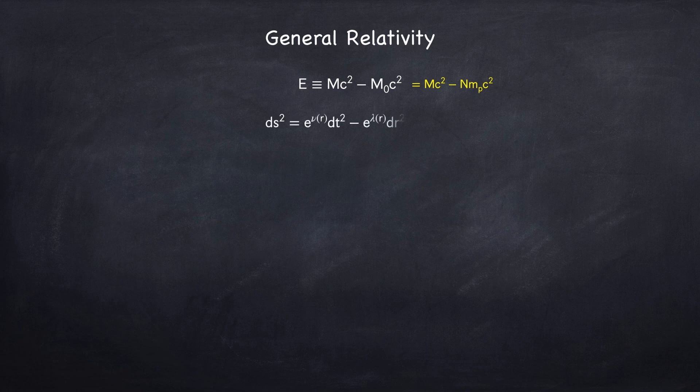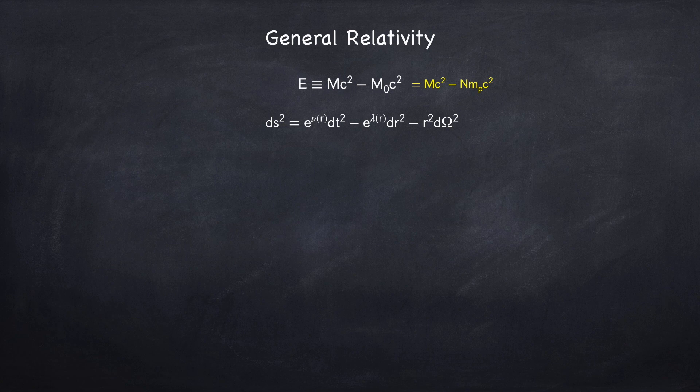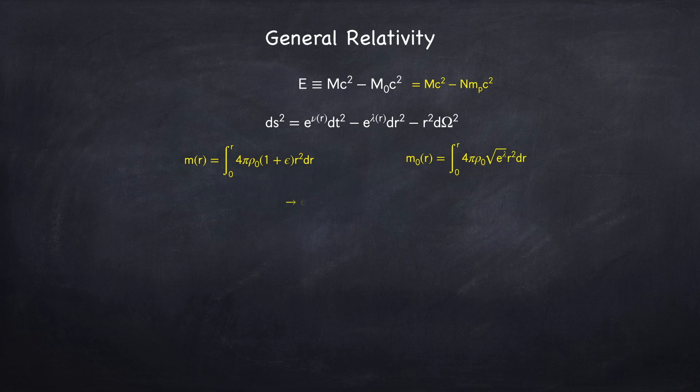We assumed a Schwarzschild-like spacetime geometry. This means that the spacetime is spherically symmetric and static, so not changing in time.